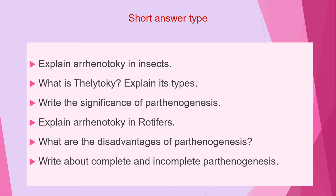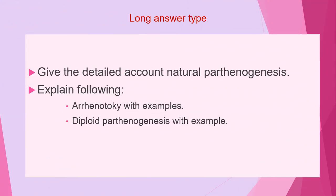These questions you have to answer in a single paragraph. The third category of questions are long answer type. The first question of this category is: give the detailed account of natural Parthenogenesis. This is an explanatory type of question and you have to support your answer with the help of diagrams and flowcharts. Next question of this category is: explain the following Arhenotoky with examples, and diploid Parthenogenesis with example. You have to write the answers of all these questions and submit to the concerned teachers of your college.